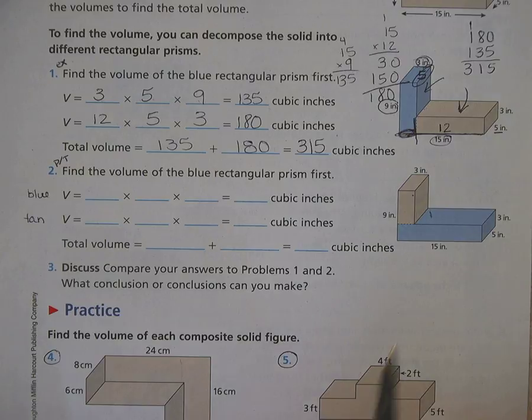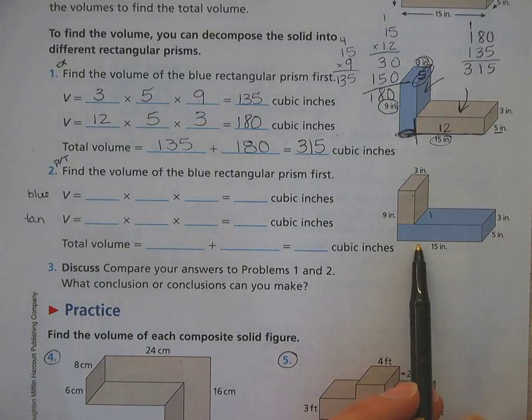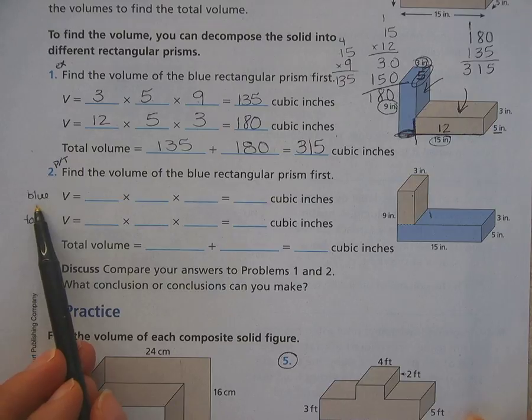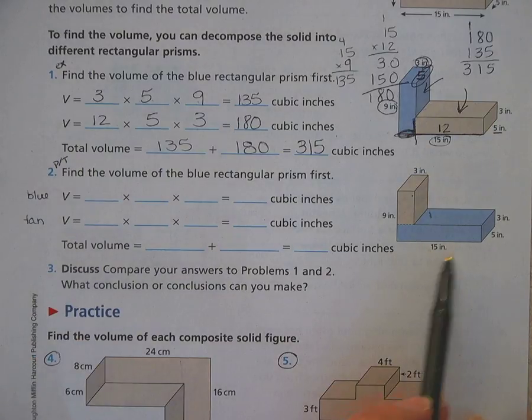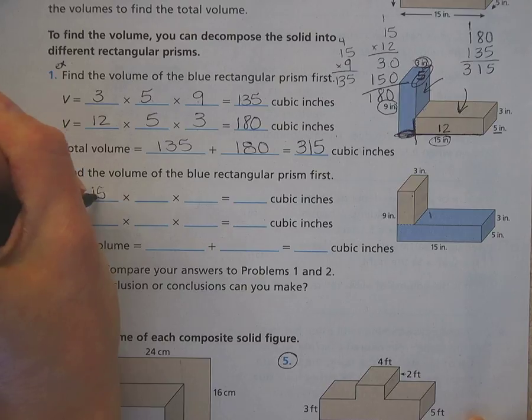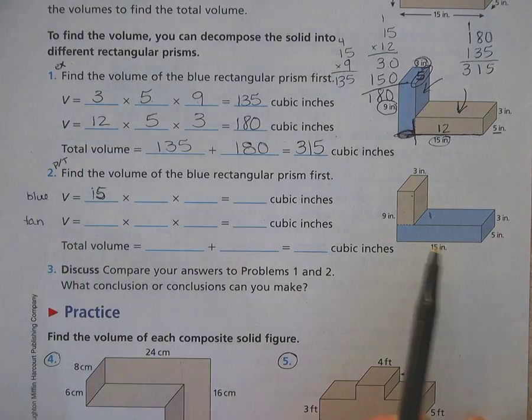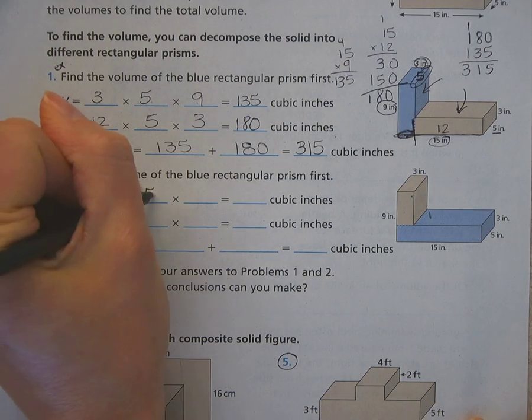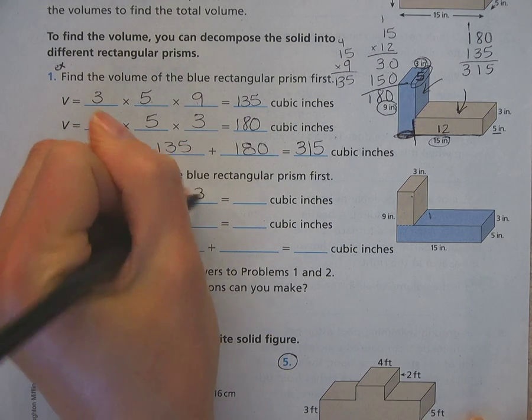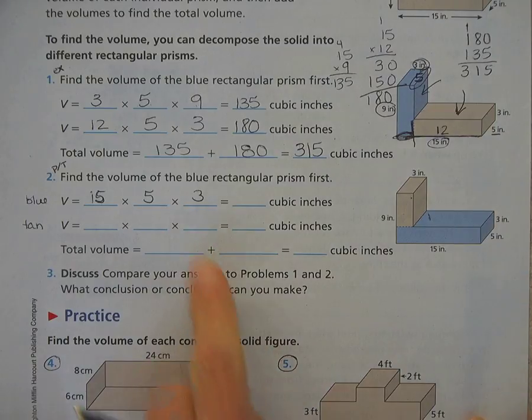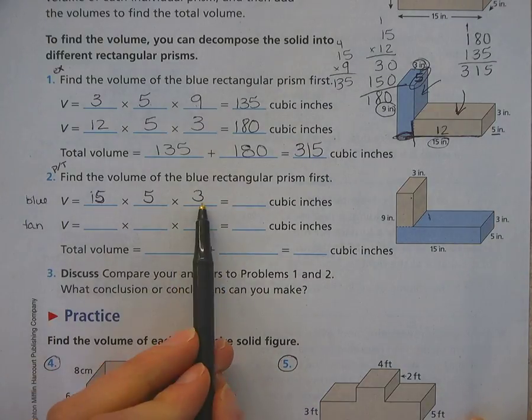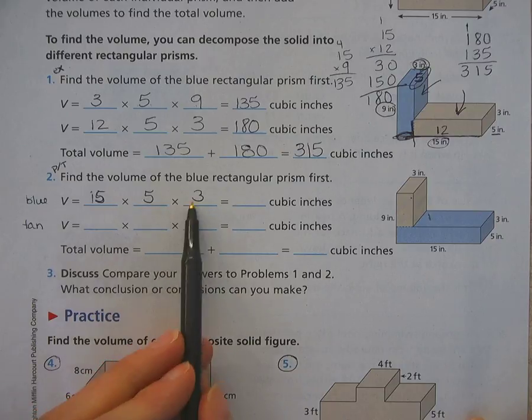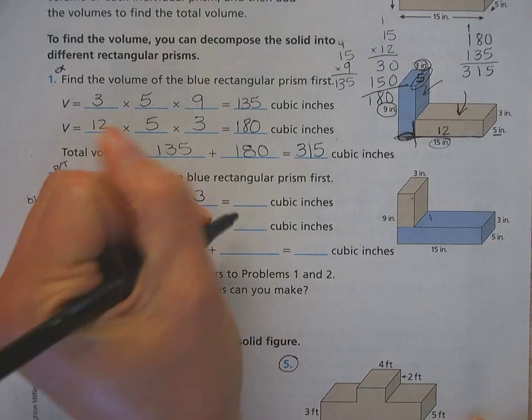Alright, so looking here, if we think about length times width times height again, and we're going to focus on the blue one first, I see here that the length would be fifteen, so I'm going to write that in. And our width is the same as before. It is five. And then our height is three inches. And if I look here, five times three is fifteen, and for some reason, I don't know why, but I always remember fifteen times fifteen equals two hundred and twenty-five.